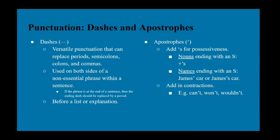Dashes are very versatile punctuation that can replace periods, semicolons, colons, and commas. They can be used in virtually any context. One of their main uses is around non-essential or parenthetical phrases — the same function as commas — which are not necessary to understanding the passage but provide additional information. You can also use dashes before a list or explanation.